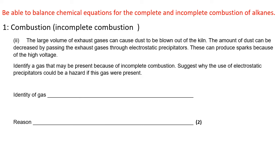Another example of something that requires a couple of written sentences. The large volume of exhaust gases from the same question can cause dust to be blown out of the kiln. The amount of dust can be decreased by passing the exhaust gases through electrostatic precipitators. They sound exciting. These can produce sparks because of the high voltage. They are exciting but also potentially really rather dangerous. So it says here: identify a gas that may be present because of incomplete combustion. Suggest why the use of electrostatic precipitators could be a hazard if this gas were present. Well, identify a gas that may be present because of incomplete combustion. Now don't be smart and write carbon dioxide because that might be present.